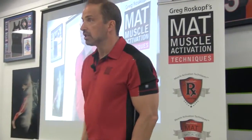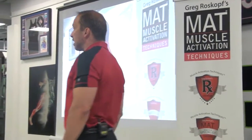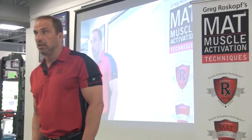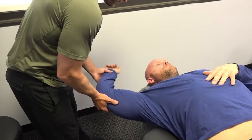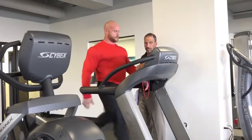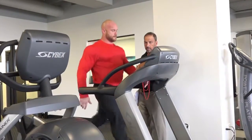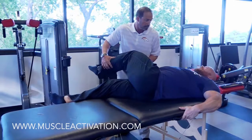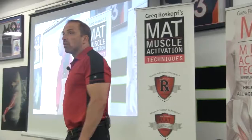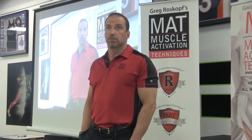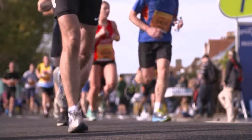With muscle activation techniques, we're focusing on the muscles that are weak or the muscles that can't contract efficiently. If we can improve the ability for the muscles to contract — or improve their ability to shorten — then the opposite muscles will be allowed to lengthen. It's the sensory receptors in the tissue that we're actually impacting when we're trying to activate a muscle. We're trying to improve the communication between the nervous system and the muscle system.